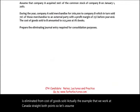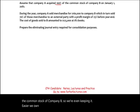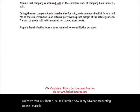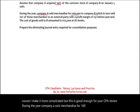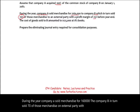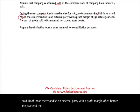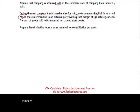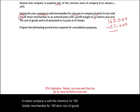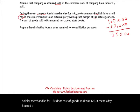Let's assume Company A acquired 100% of the common stock of Company B — a 100% relationship. During the year, Company A sold merchandise for $160,000 to Company B, which in turn sold 70% of those goods to an external party with a profit margin of 25% before year end. The cost of goods sold to B amounted to $125,000 at A's books, meaning Company A booked a profit of $35,000.